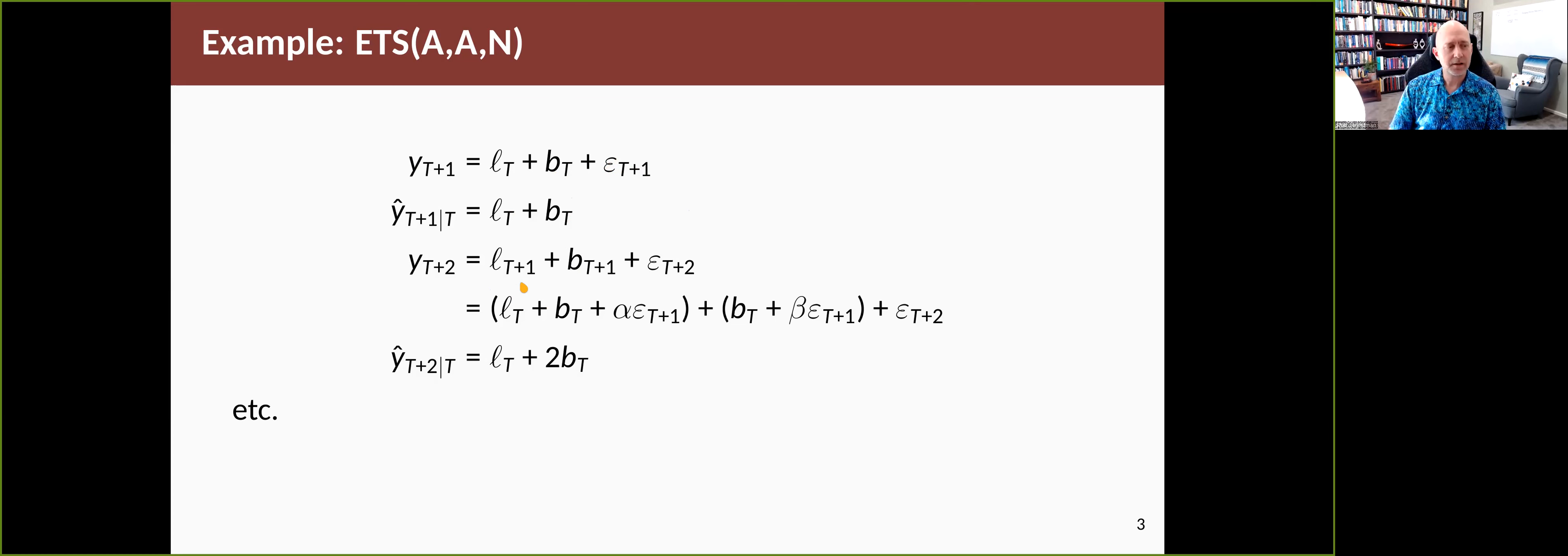The next horizon, time T plus two, we write out the equation for the forecast, which is L_T+1 plus B_T+1 plus epsilon_T+2. Then we use the level equation and replace it, and we use the slope equation and replace it. We now have an expression for two steps ahead using the last observed level and the last observed slope plus some errors.